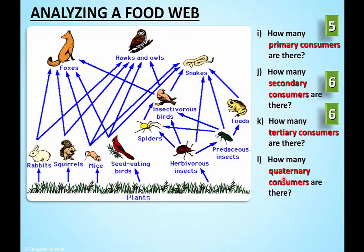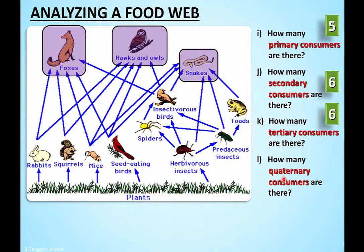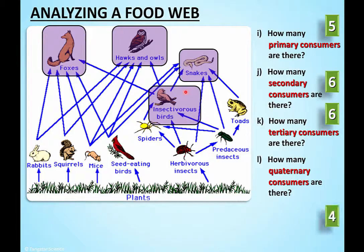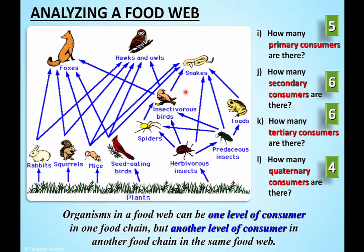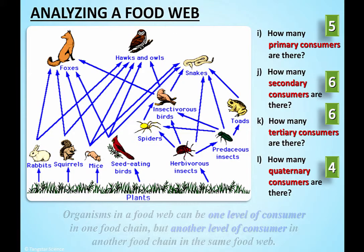How many quaternaries are there? Almost the same ones! Here's the owl: plant, primary, secondary - but go another way and you get plant, primary, secondary, tertiary - but look at this: plant, primary, secondary, tertiary, up into the owl as quaternary. That owl is a secondary, a tertiary, and a quaternary. All this is saying is you can fit under more than one trophic level in the same food web.